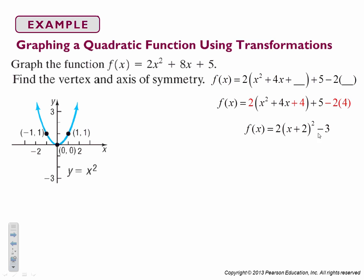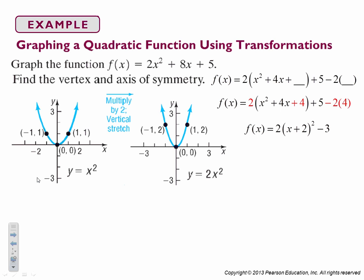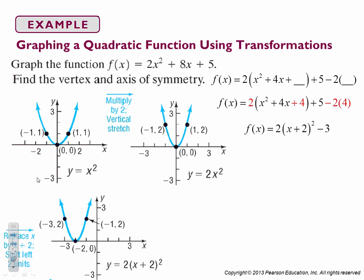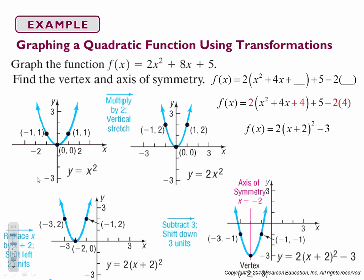So here's my nice parent function. I'm going to have a vertical stretch of 2. So instead of going over 1 up 1, I'm going to go over 1 up 2. Instead of going over 2 up 4, I'm going to go over 2 up 8. So it's going to double everything. The minus 3 means I'm going to move it down 3 units. And the plus 2 means I'm going to move it left 2 units. So there's the moving it left 2 units. And here's shifting it down 3 units. So my axis of symmetry is x equals negative 2.